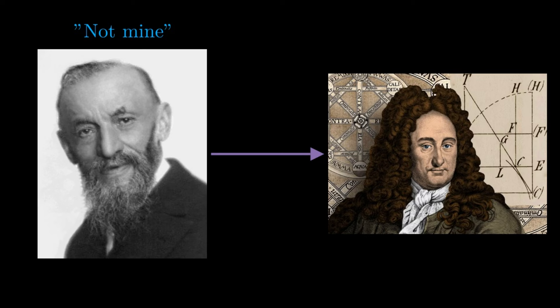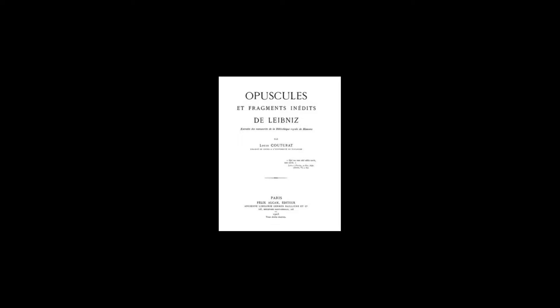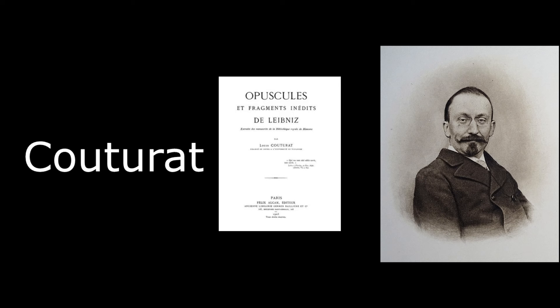In fact, Leibniz is known for a lot of things, but his contributions to linguistics and the question of an international language are not well known at all. This is because the manuscripts in which Leibniz covers the question were only discovered at the beginning of the 20th century by Professor Couturat. These fragments were then published in the volume Opuscules et Fragments Inédits de Leibniz.